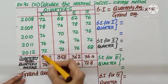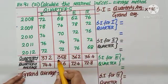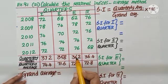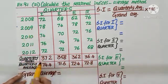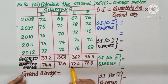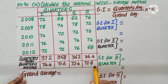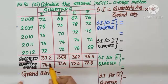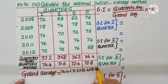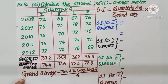The total of each column, 372, 358, 362, 364. Each total, divide by 5. We get 74.4, 71.6, 72.4, 72.8. Now, grand average. Add it all, divide by 4. 74.4, 71.6, 72.4, 72.8, divide by 4.